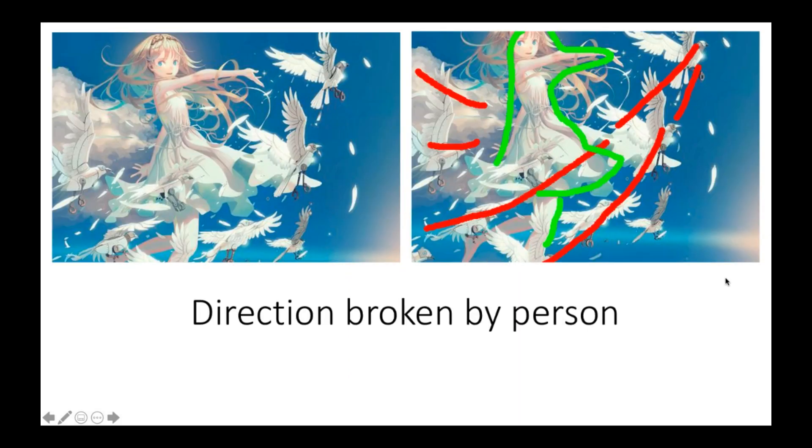Direction can also be broken by a person. So these aren't lines, but you can see that there's a specific direction with these robot birds. What is up with these anime artists? Anyway, the robot birds are flying in this direction right here, just kind of going up in that direction. And so because of this girl and the way she puts out her arm and this dress and this hair, it's just breaking this parallel direction up. And so it makes it more interesting.